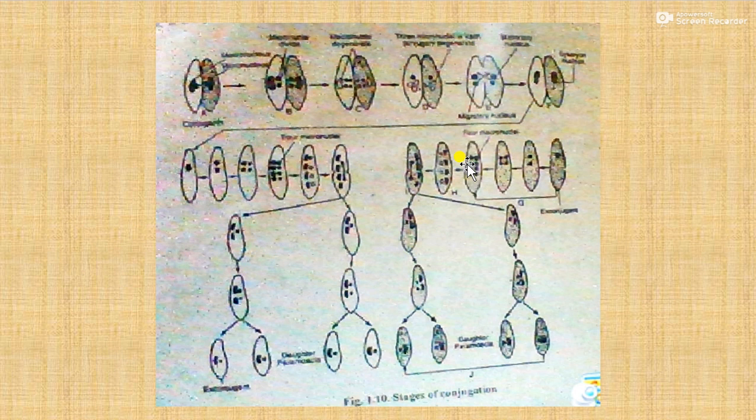It is a unique type of sexual process in which two individuals of the same species mutually exchange their micronuclear material. It occurs under unfavorable conditions such as starvation, shortage of food, sudden darkness, or low temperature. Conjugation occurs after about 300 asexual generations of binary fission to rejuvenate the dying paramecium.